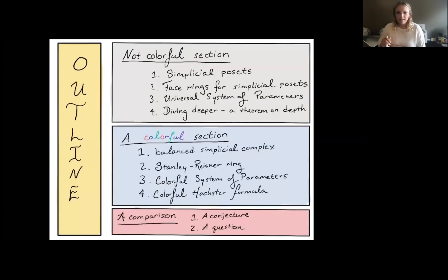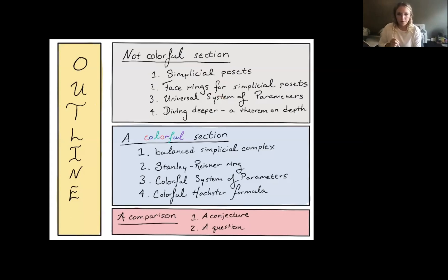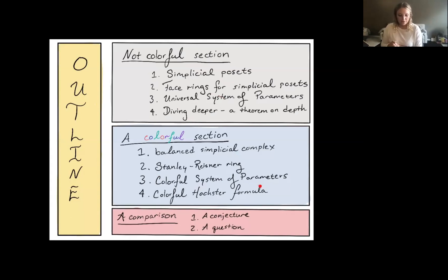Our outline: this talk is in three sections. We have a not-so-colorful section, a very colorful section, and a comparison of the not-colorful and the colorful worlds. In the not-colorful section, we'll cover what simplicial posets are, introduce face rings for simplicial posets, a universal system of parameters, and a theorem on depth. In the colorful section, we'll cover balanced simplicial complexes, introduce a Stanley-Reisner ring, a colorful system of parameters, and a colorful Hochster formula. Then in the comparisons section, we'll compare the two and give a conjecture and a question.